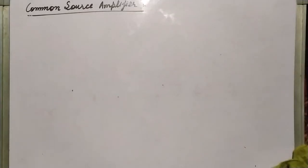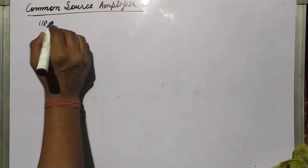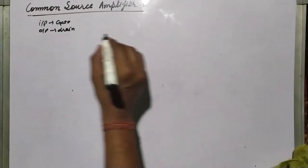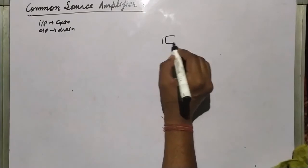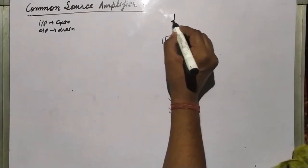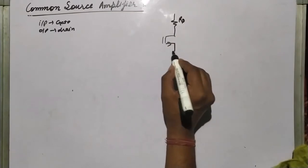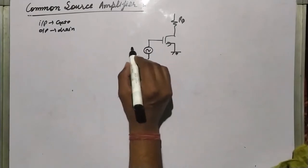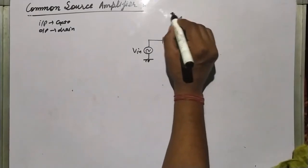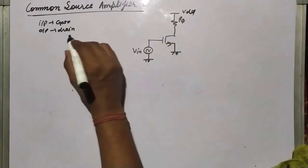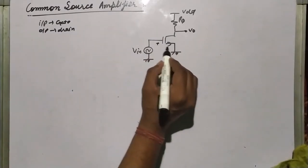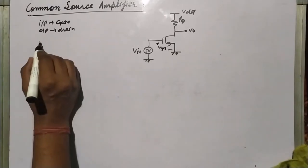Hello everyone, today we will discuss the common source amplifier. In a common source amplifier, we give input to the gate terminal and take output from the drain terminal. Let's draw the common source amplifier — this is NMOS with RD, input is given to the gate terminal as V_in, and output is taken from the drain terminal as V_out.